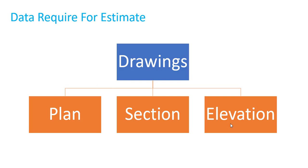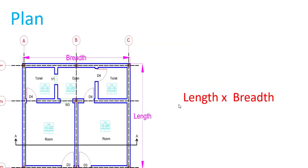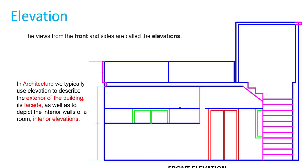During estimation: when we need length and breadth, we go directly to the plan; when we need material or breadth and height of an object, we go to the section; and when we need the exterior part of a building, we go to the elevation. It is very important to know what we get from each part of the drawing.